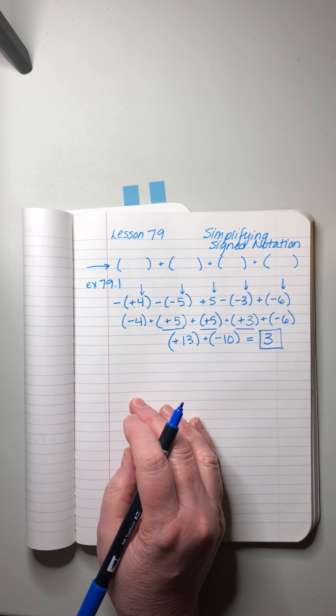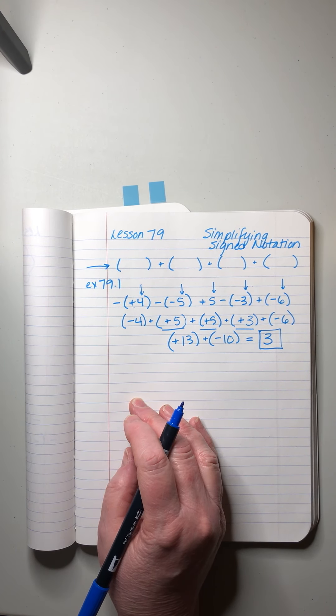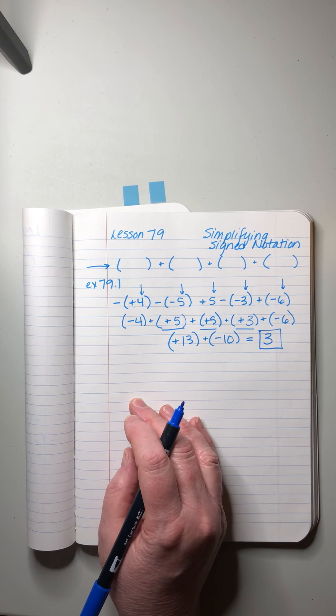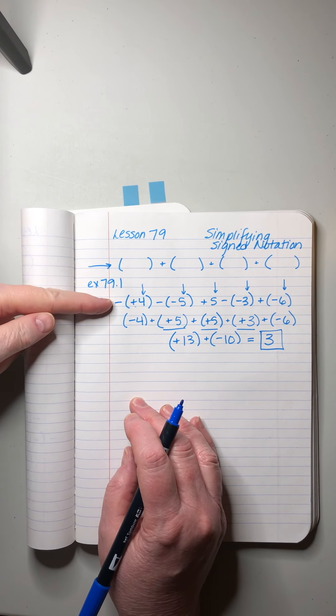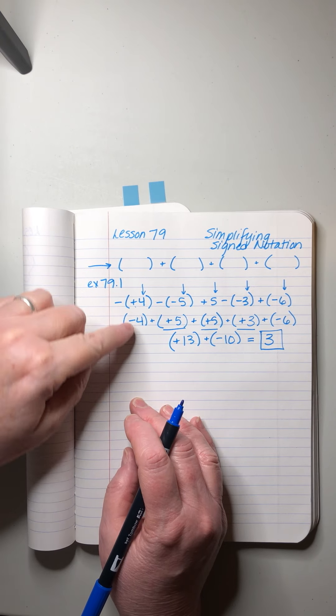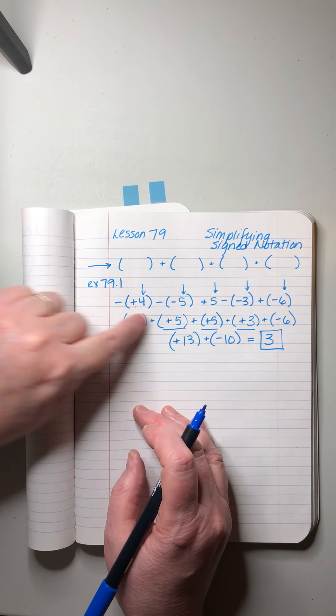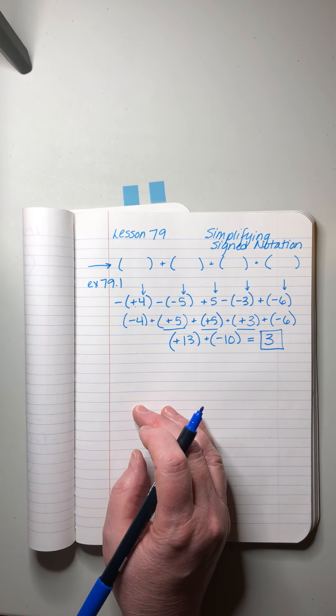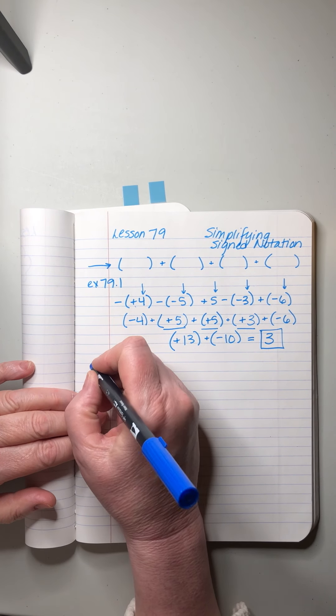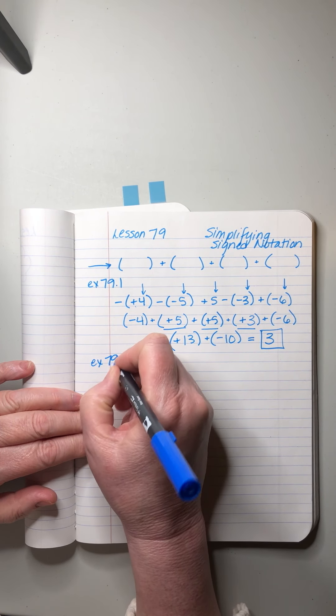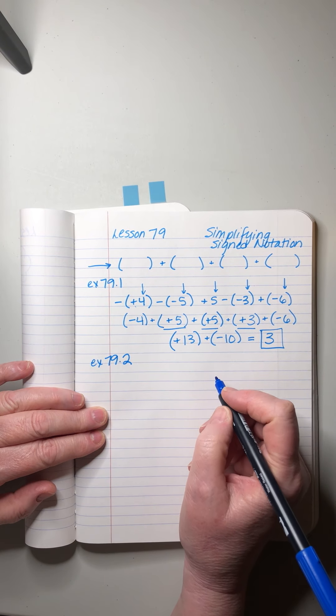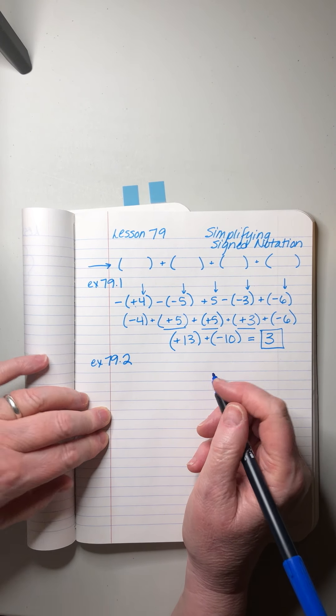When you are working the homework problems, it is not necessary for you to copy it as exactly as it's written. You can clean it up and write this as your first row in your homework. I'm going to continue to do it this way because I want you to see exactly what the problem looks like, but you don't need to copy the problem into your book. There are four of these, ready?